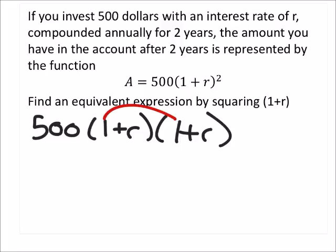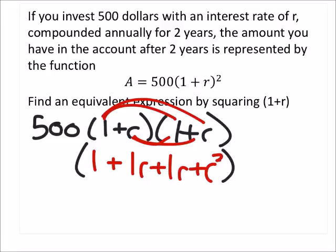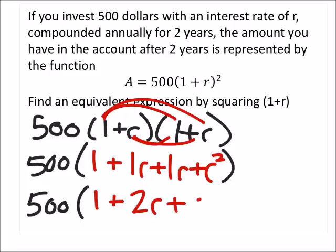But when we distribute this, and this would be in parentheses as well, we'd have 1 and then plus 1r and then plus this 1r and then plus r squared. And we still got the 500. So, 500 times 1 plus 2r plus r squared.